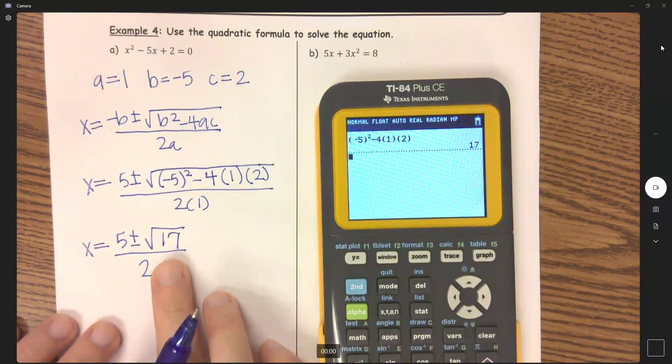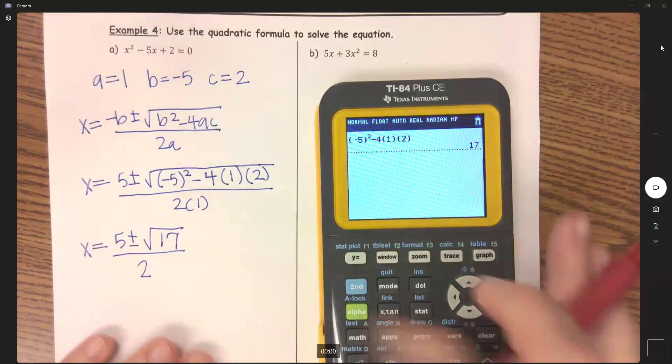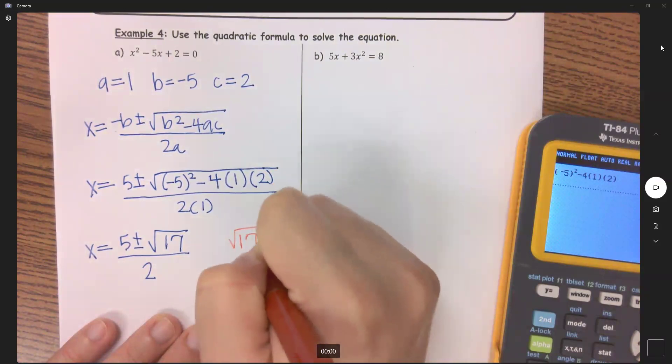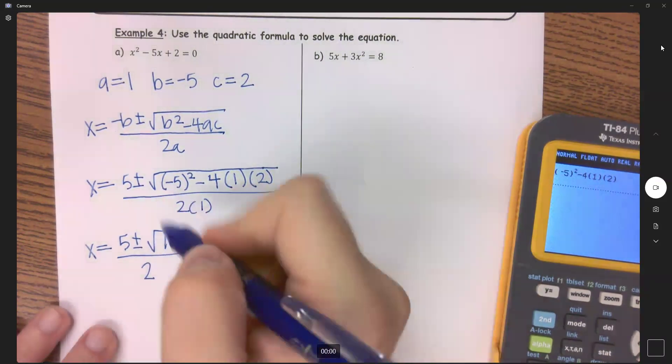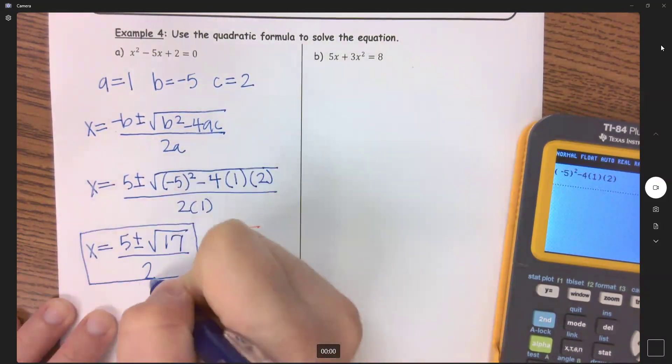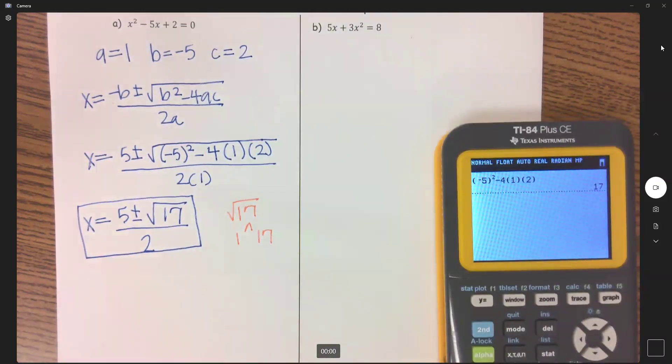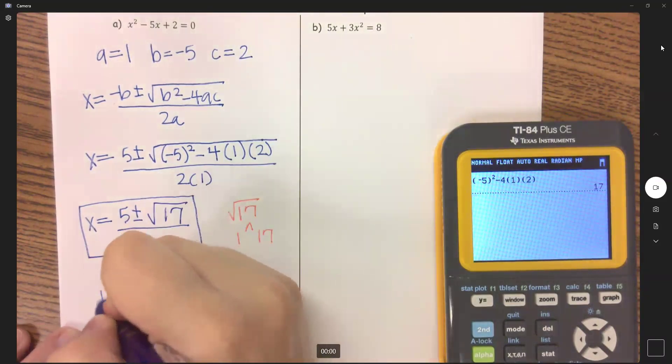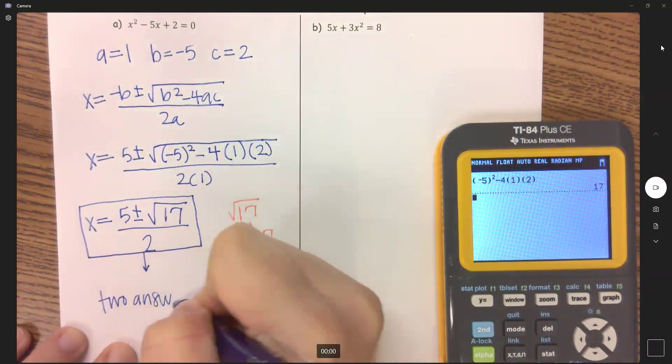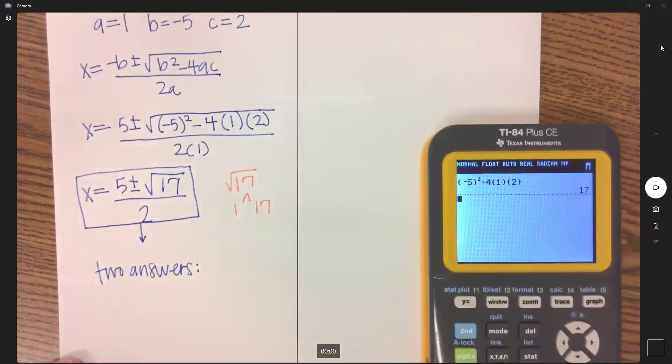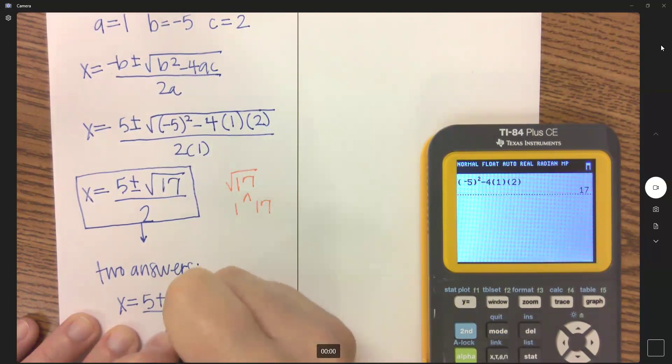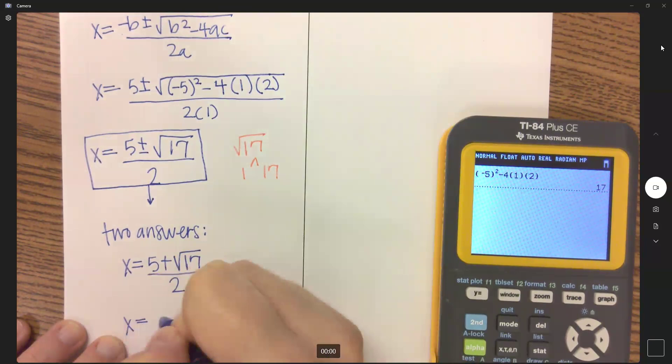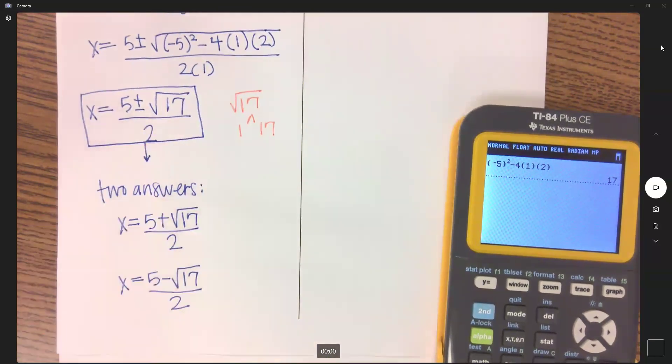Now, if I could simplify this radical, you need to, but 17 is a prime number. And so when you go to simplify the square root of 17, that's just 1 times 17, and so you don't have a pair of anything that comes out. So this is my answer. Now, we're going to use our calculator to verify this, but this is representing 2 answers, right? And we have a quadratic. It's an x squared. So more times than not, we have 2 answers. So my first answer is that x equals 5 plus the square root of 17, all over 2. And my second answer is that x equals 5 minus the square root of 17, all over 2. Those are my two answers, but we can write it as 1.